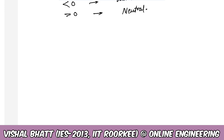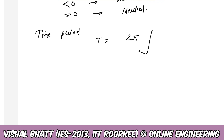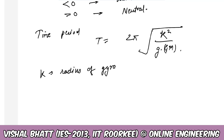The time period of oscillation is given as two pi times the square root of k-squared divided by g times GM, where k is the radius of gyration and GM is the metacentric height.